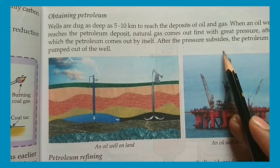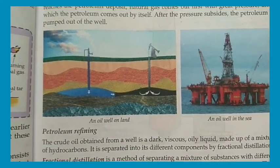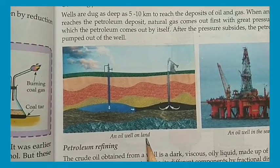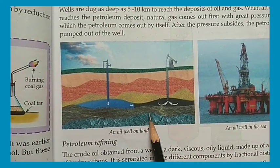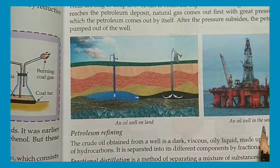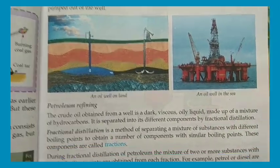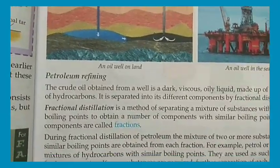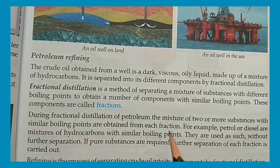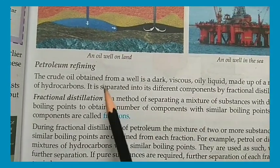After the pressure subsides, the petroleum is pumped out. We can see in the picture oil wells on land — how we obtain oil from land — and also oil wells in the sea. Next is petroleum refining. The petroleum obtained from the earth's surface or seabed contains impurities, so we refine it.